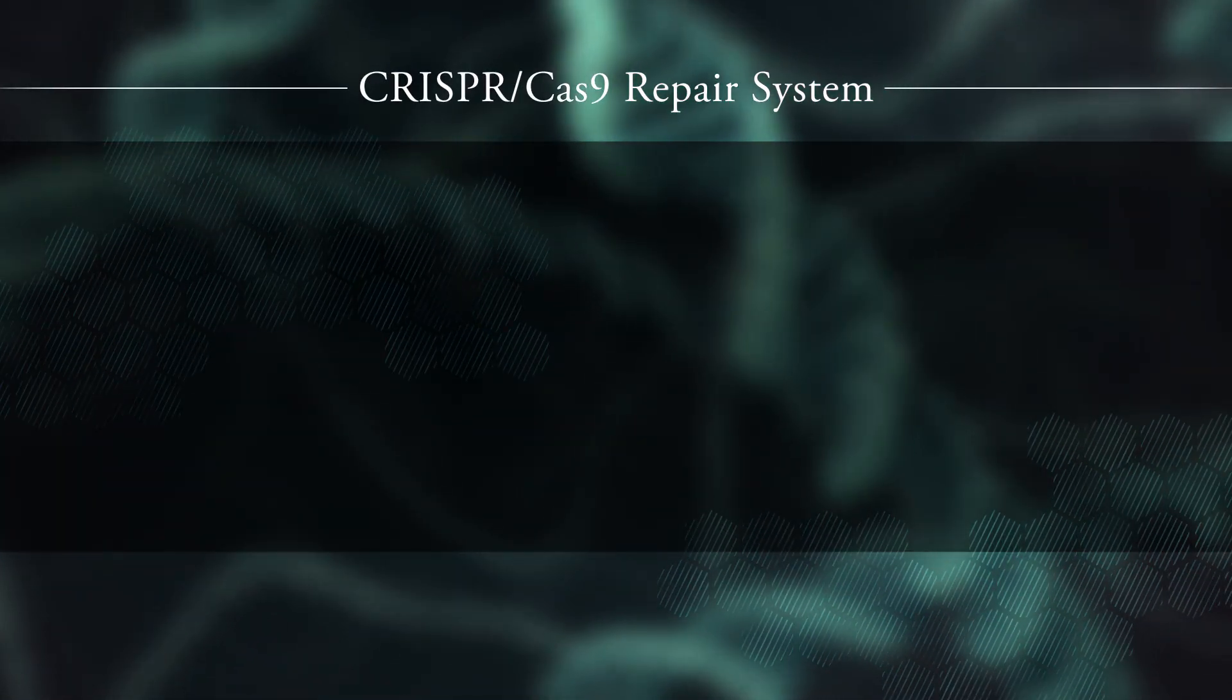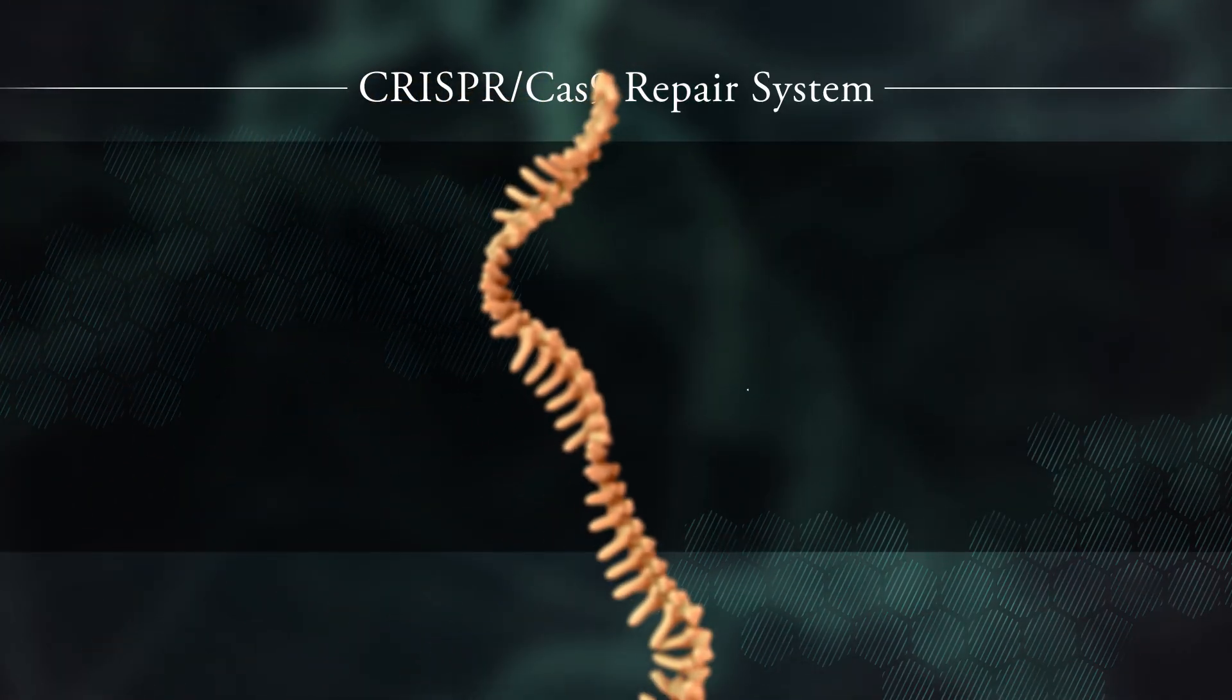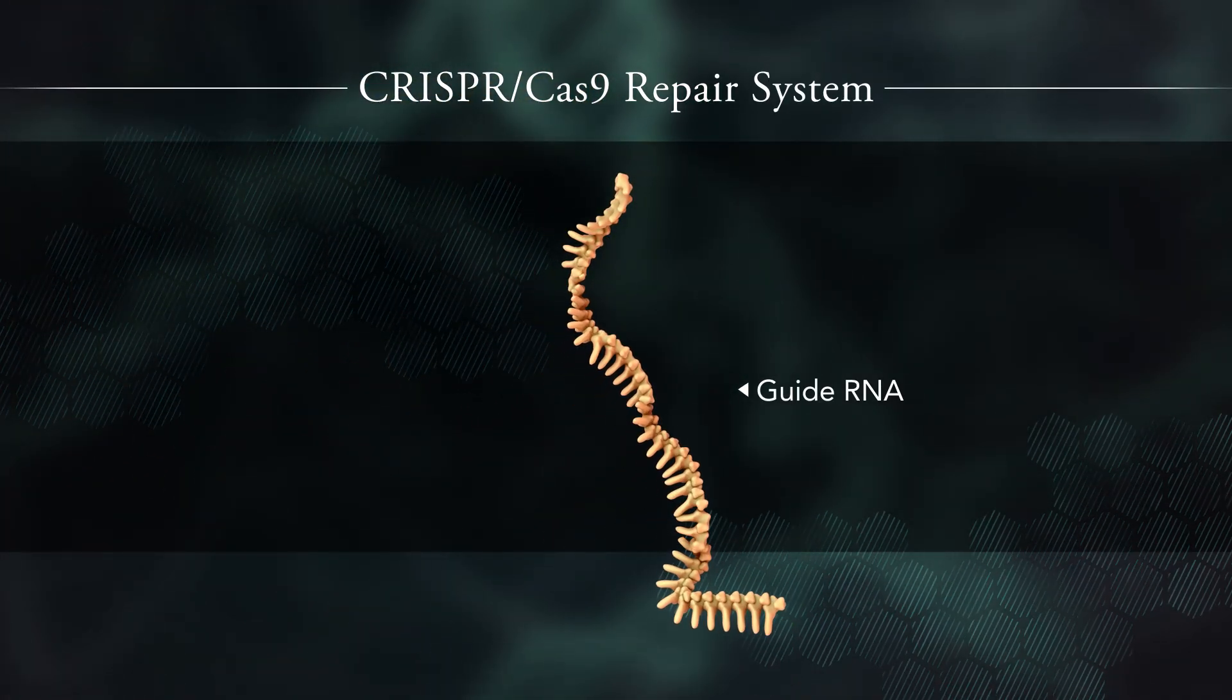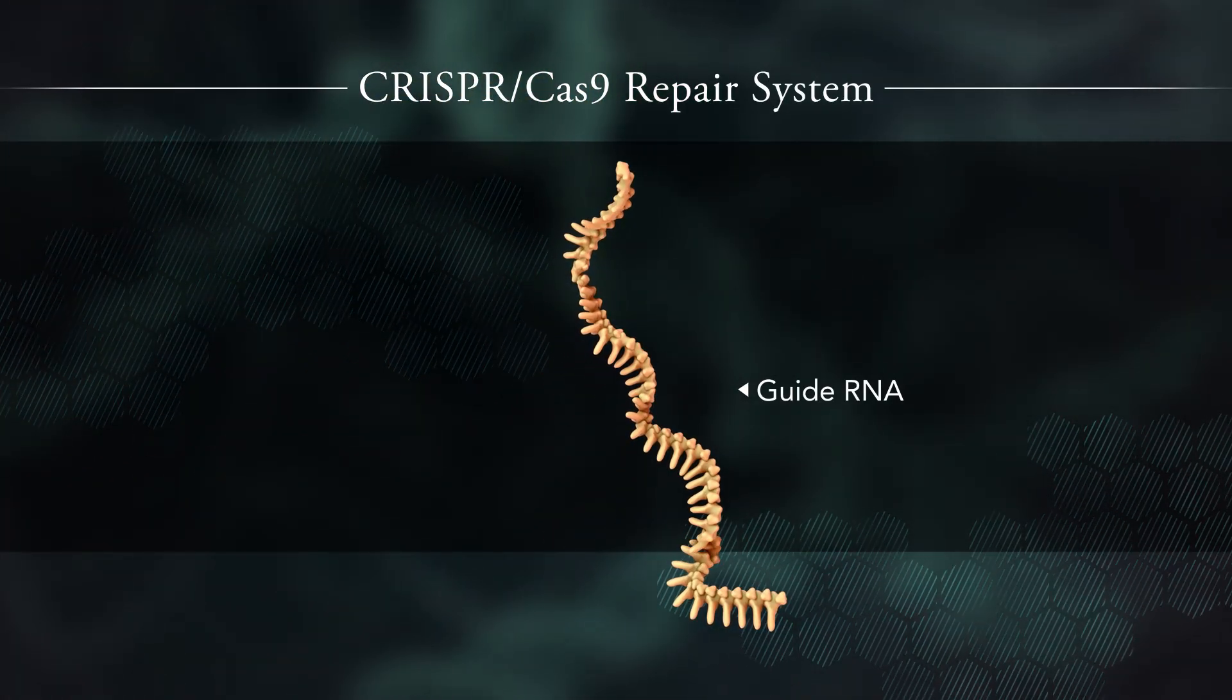The CRISPR-Cas9 repair system has three components. A guide RNA that seeks out and binds to a specific location in the DNA.